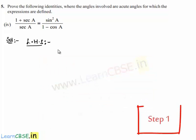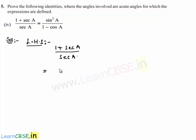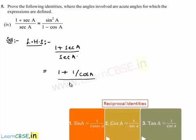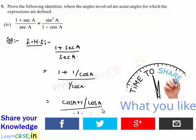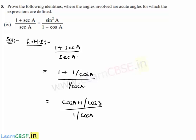On the left hand side, 1 + sec a is written as 1 + (1/cos a). Taking cos a as LCM in the numerator, we get (cos a + 1) / cos a, all divided by (1/cos a). The cos a in the denominator of the numerator cancels, leaving cos a + 1, which is 1 + cos a. So the simplified form of the LHS is 1 + cos a.